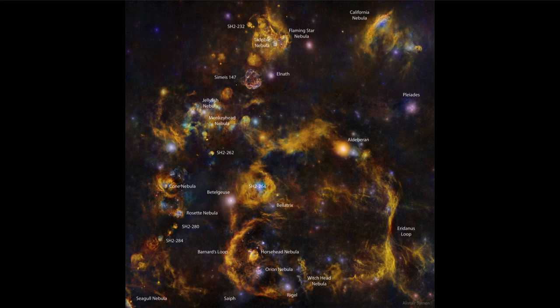However, in this whole region of the sky around Orion and extending out into nearby constellations, we can see a lot of other nebulae as well. Starting from the lower left-hand corner, just barely visible, is the Seagull Nebula, and going all the way up to the upper right is the California Nebula. You can see all of them labeled here.